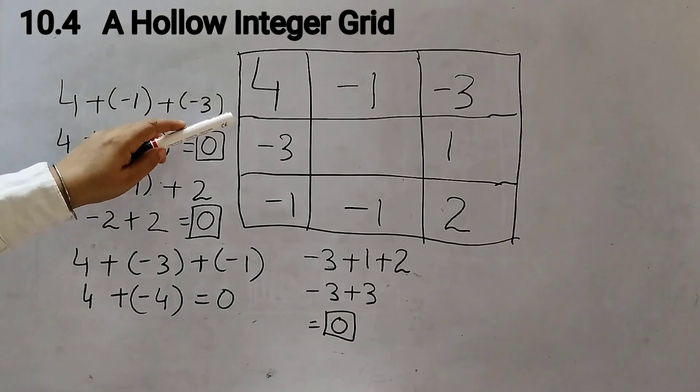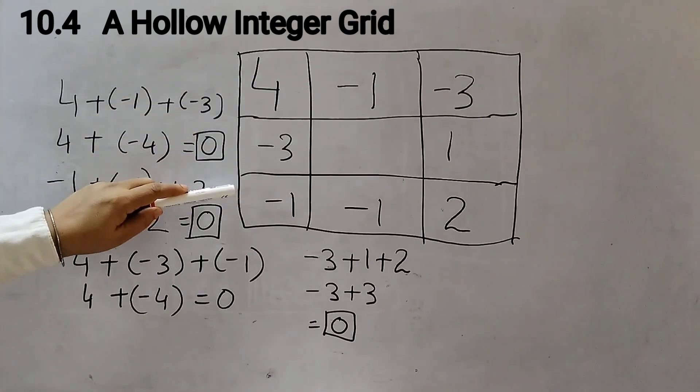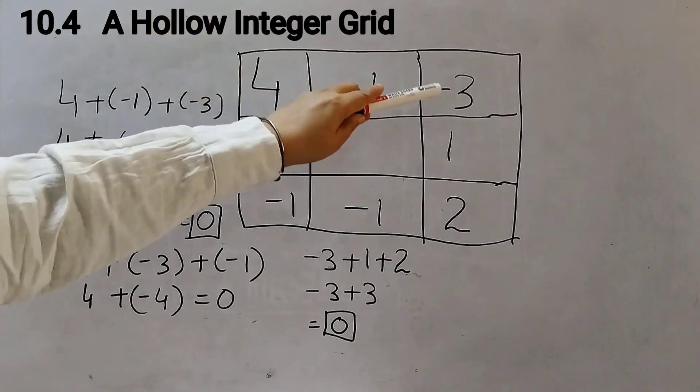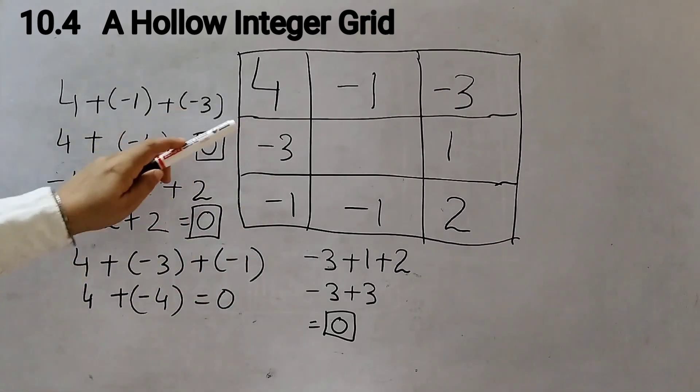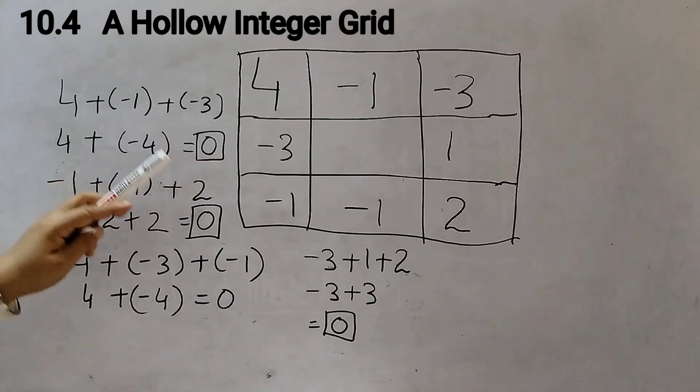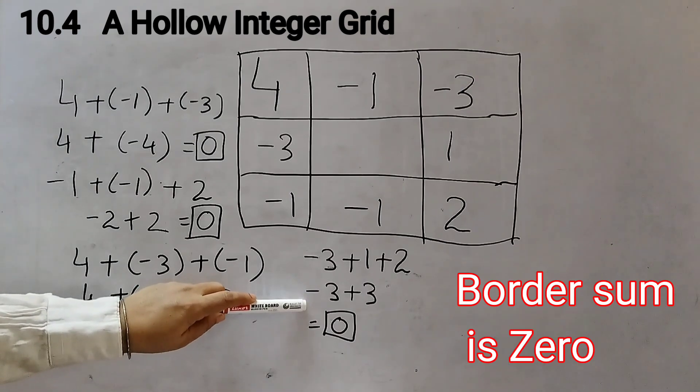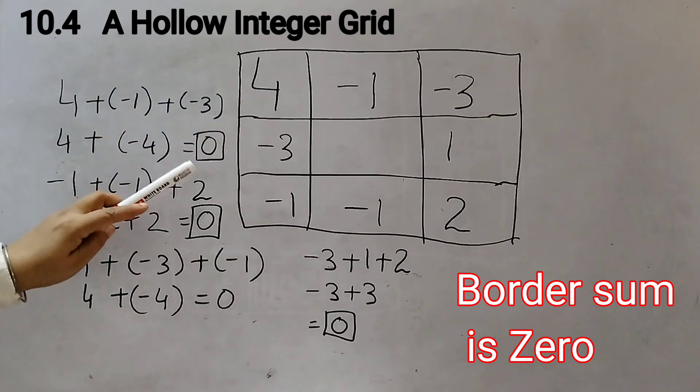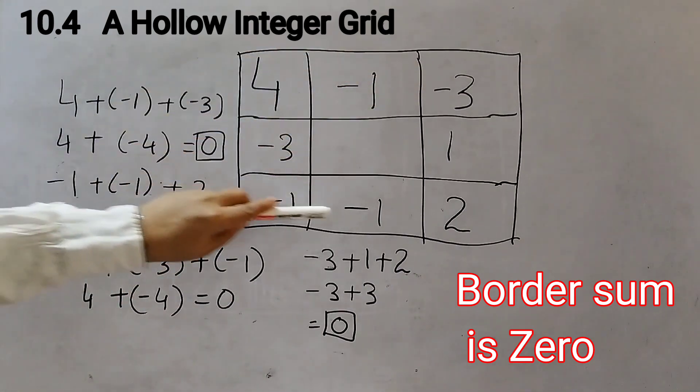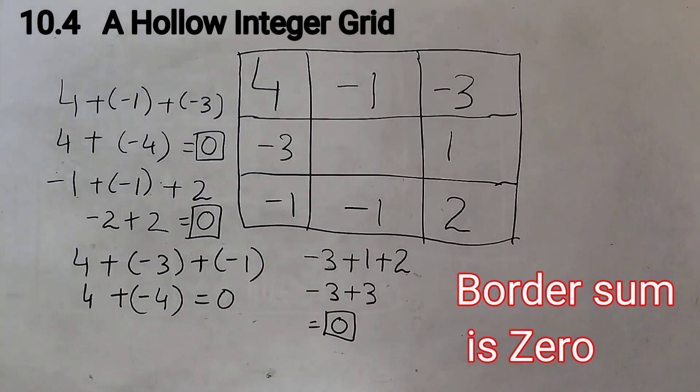In this grid, the numbers in each of the two rows, that is the top row and the bottom row, and the numbers in each of the two columns, left column and right column, add up to give the same number which is 0. We shall call this sum as the border sum. The border sum of this grid is 0 because these numbers are on the border, this is hollow, there is nothing here, so this is the border.